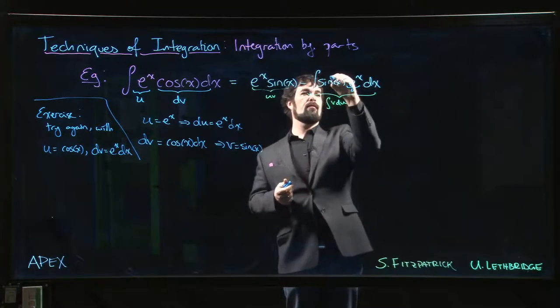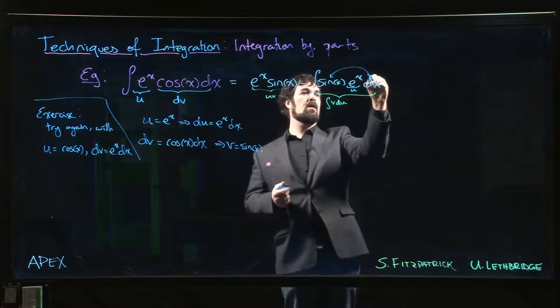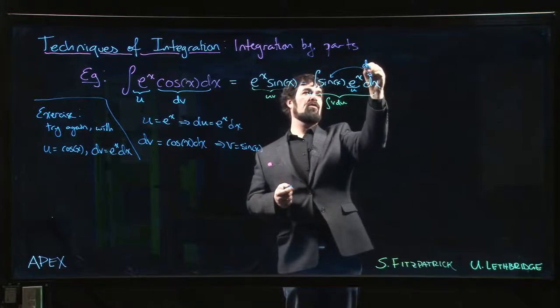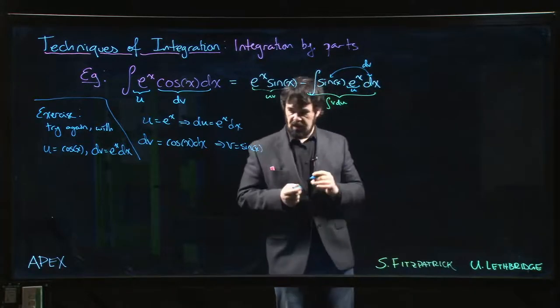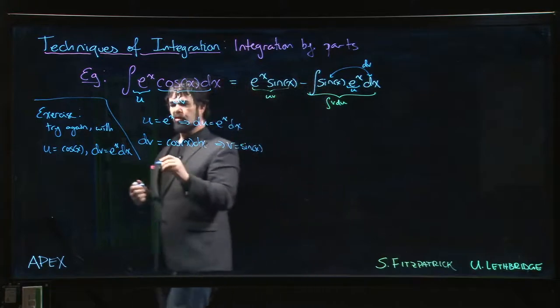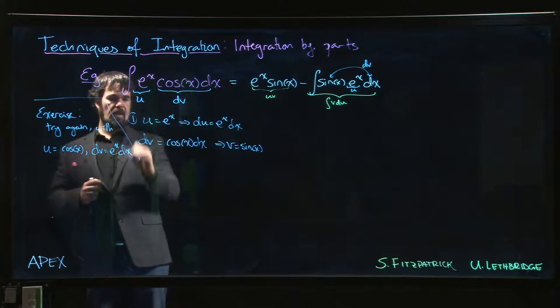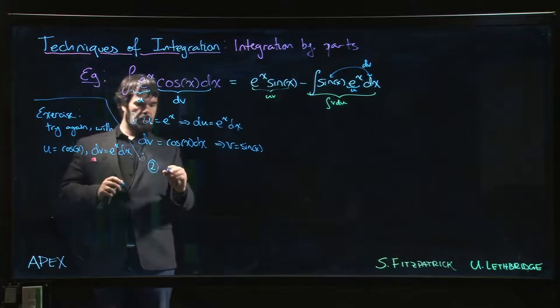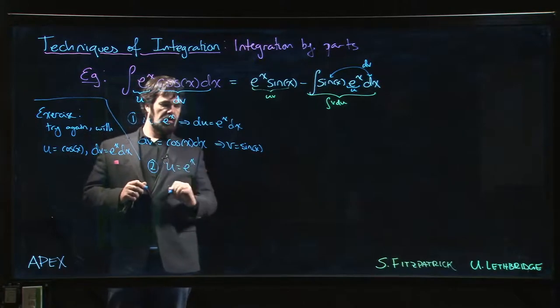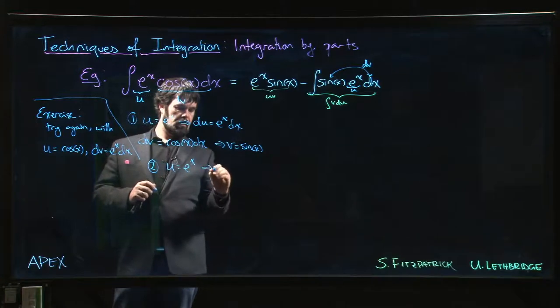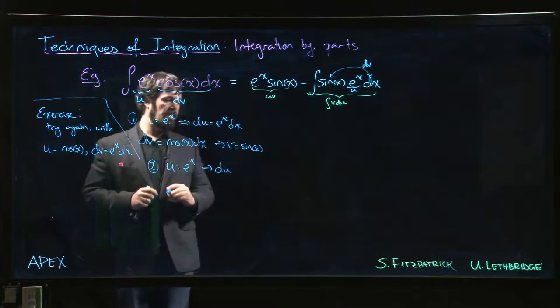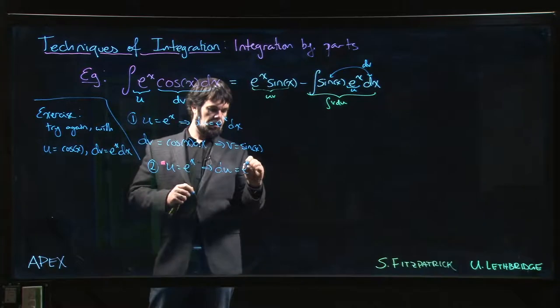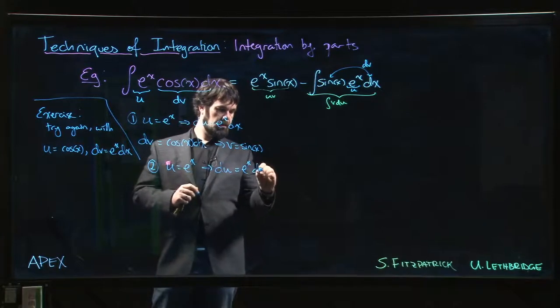If you chose dv to involve the trig function last time, you need to do that again, okay? So this is kind of step one. So at step two, we still have u equal to e to the x. We still have du equal to e to the x dx.